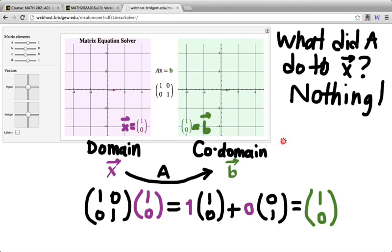So now we might ask the question, well okay, A did nothing to the vector x 1, 0. What might A do to other vectors in the codomain? So we might be interested in not just plugging in a single vector x into this equation and seeing what happens, but plugging a bunch of different vectors x into this equation and seeing what happens, seeing what relationship exists between the x on the left and the b on the right.